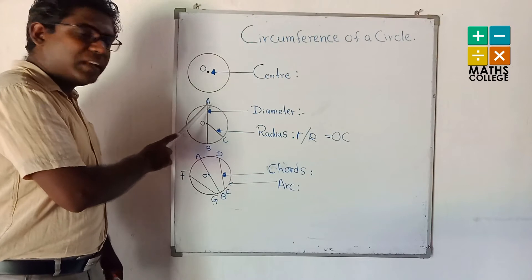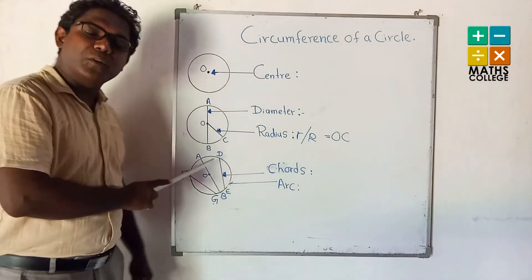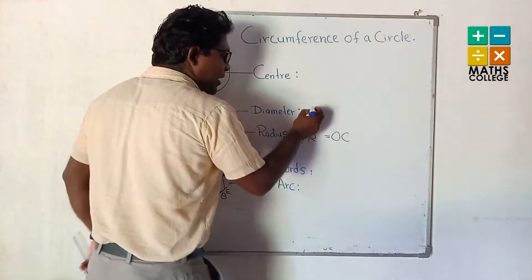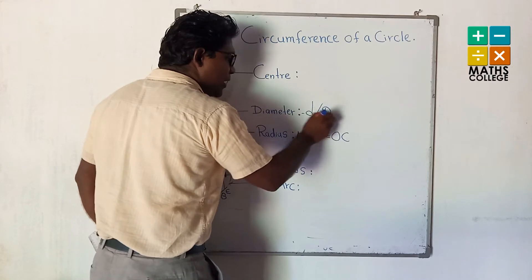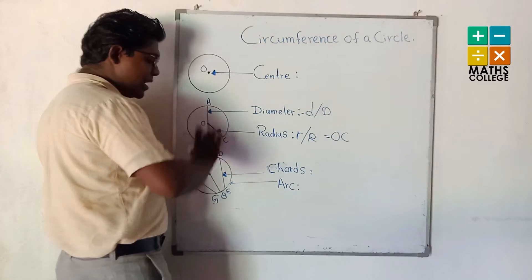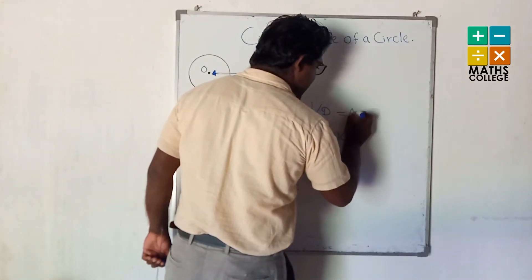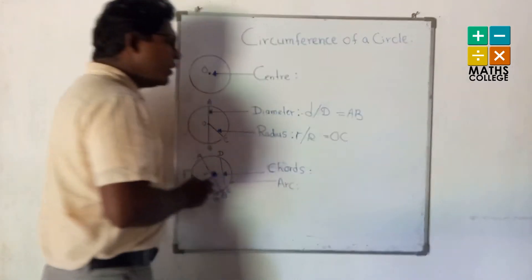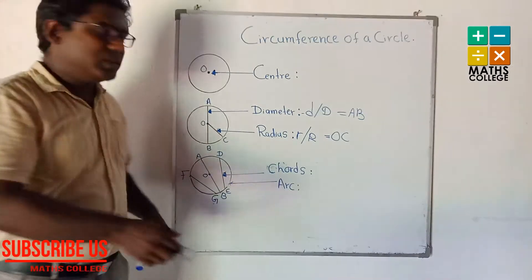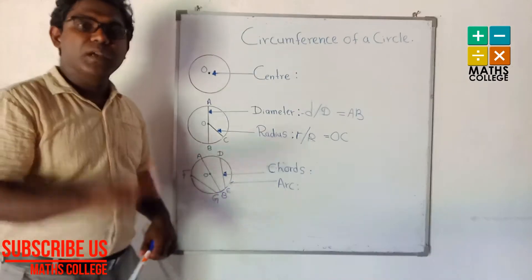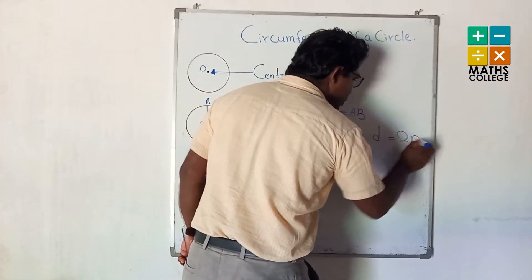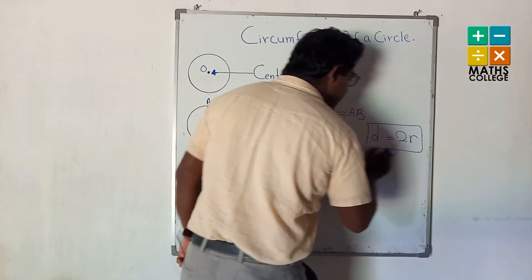Next is diameter. Diameter means the straight line joining any two points of the circle. We can use the symbol d or capital D, and in the figure we name it AB. You know that diameter equals 2R — we can find diameter equals two times R.